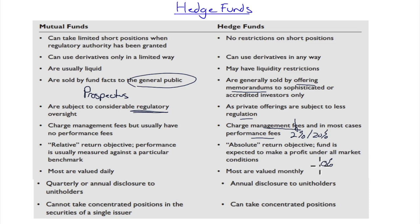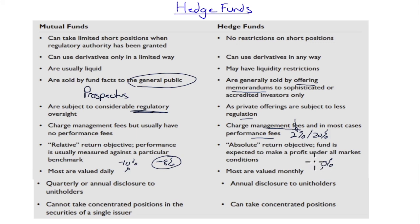Hedge funds have an absolute return objective — their benchmark is zero percent. They look to beat zero in all markets. A mutual fund is relative return: if the market is down ten percent, a mutual fund just wants to be down eight percent — it wants to beat the benchmark, not necessarily earn a positive return. Hedge funds don't want negative returns; their benchmark is zero, and they're trying to beat that all the time.